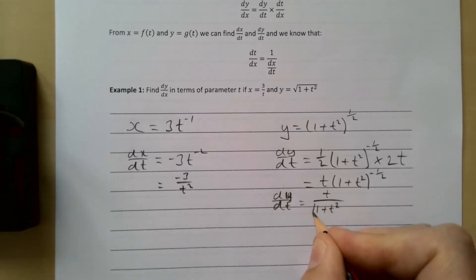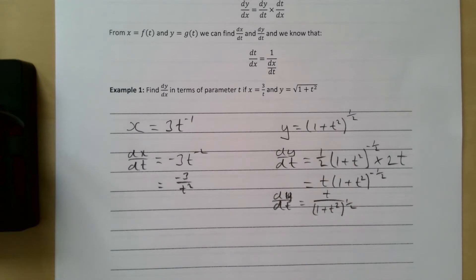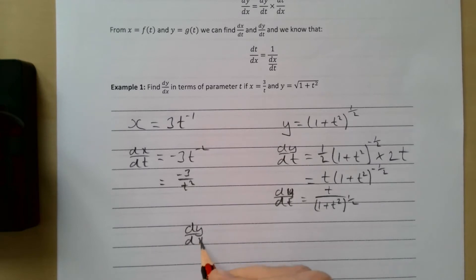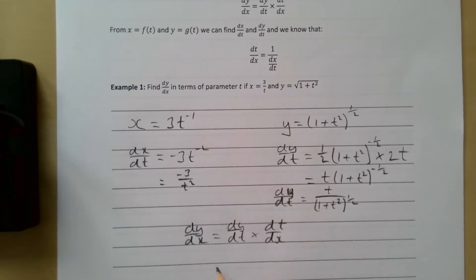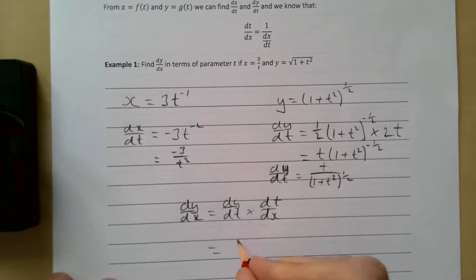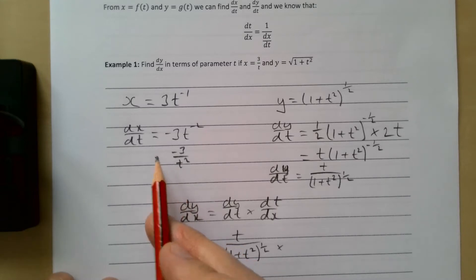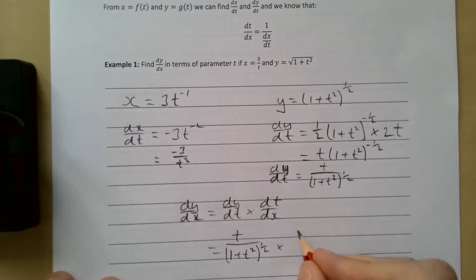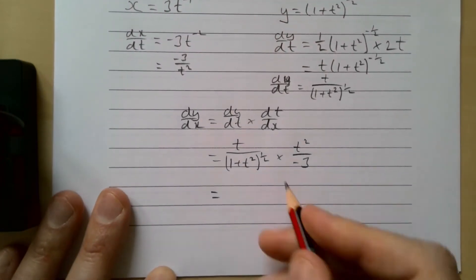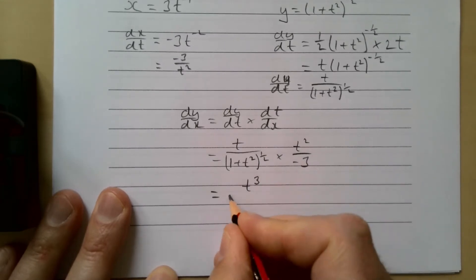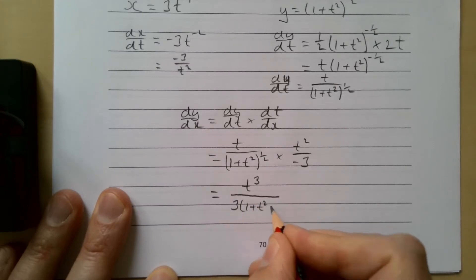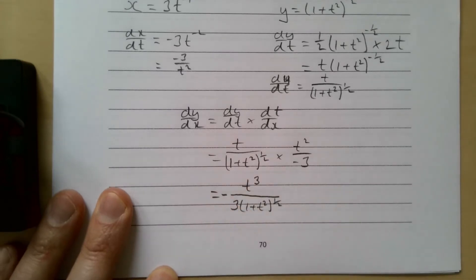To find dy/dx, we use dy/dx equals dy/dt multiplied by dt/dx. dy/dt is t over (1 + t²)^(1/2), and dt/dx is dx/dt flipped upside down, which is t² over minus three. Multiplying these two fractions, top times top gives t cubed, over minus three times (1 + t²)^(1/2). Bringing the minus to the front, that's our first example done.